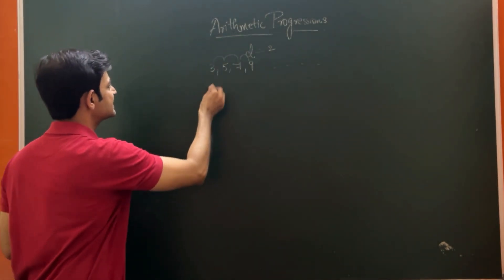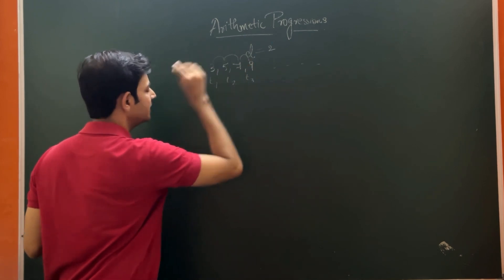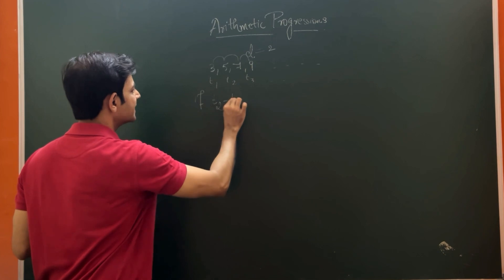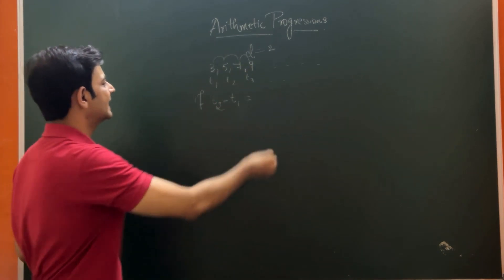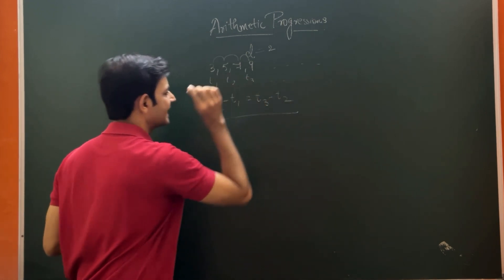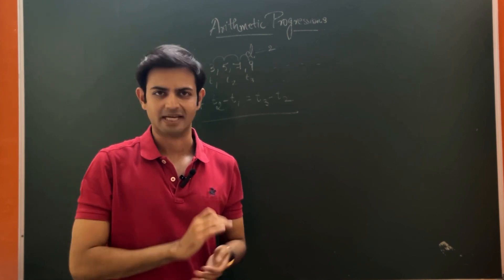If this is my first term, second term, third term and so on, if T2 minus T1 is equal to T3 minus T2, then we say the given sequence is in arithmetic progression.